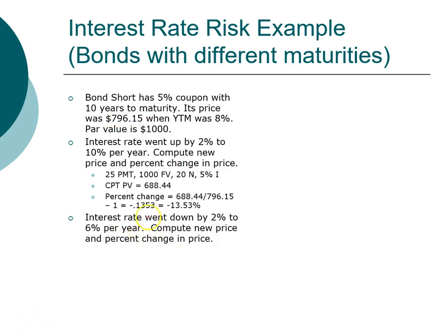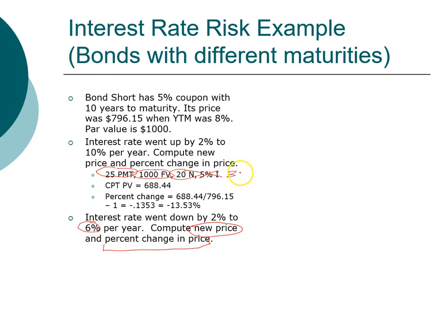Now for more practice, let's look at this same bond but assume that interest rate goes down by 2%. If interest rate goes down, we know that bond prices should go up. Pause the video and compute the new price of the bond and the change in price. Welcome back — the bond has the same coupon payment, same face value, same time to maturity. The only difference is that now interest rate goes down to 6% per year, meaning 3% every six months.